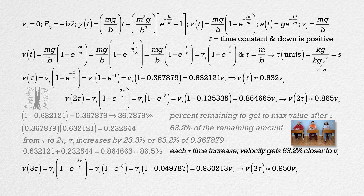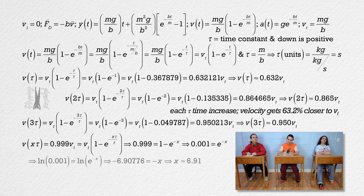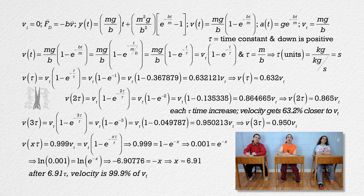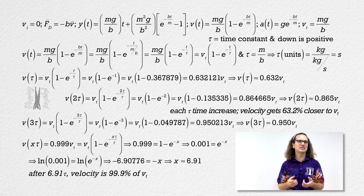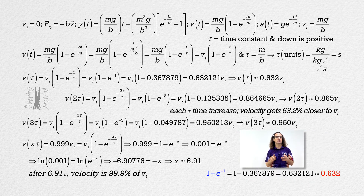We can calculate that it takes roughly 6.91 time constants to reach 99.9% of its terminal velocity. The time constant is a way to express how much time it takes for the object to experience a 63.2% change in its velocity. This 63.2% number does keep coming up in our discussion, and 0.632 is actually not a random number. 0.632 is the number you get when you subtract e to the power negative 1 from 1. That expression is in our velocity equation and you will most likely see it again. For the purposes of the AP Physics C exams and curricula, it is a number you should recognize and know how to determine.